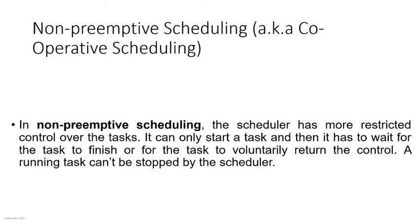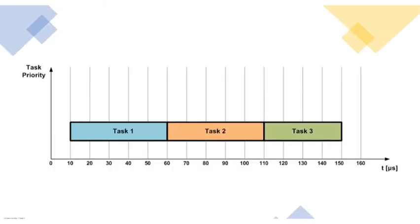Next is non-preemptive scheduling. Here, once a task's execution has started, only after the completion of that task can the next task be executed. As you can see in the diagram, only after completion of task one is task two permitted — even if task two is a higher priority task, task one cannot be preempted, meaning in-between interruption is not allowed. This type of scheduling is called non-preemptive scheduling. These two terms are very important, especially for interviews.